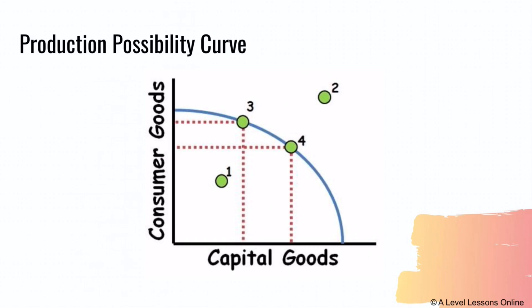Point two on the PPC represents a combination that is impossible to achieve due to scarcity — you cannot produce beyond the PPC curve. If you want to hit that point, you must shift the entire curve outward, for example by improving technology. Points three and four are where most economies actually operate, and they show very different opportunity cost trade-offs.